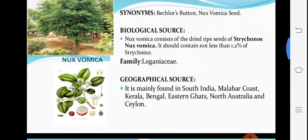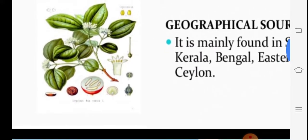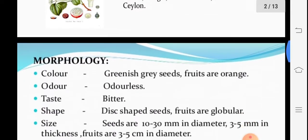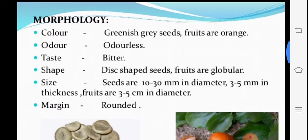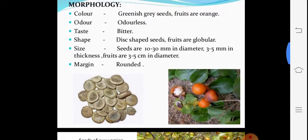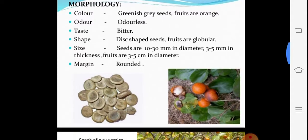Please see the flowering twig, the fruit, and the seeds. The fruits resemble those of Terminalia. The fruits are two to four seeded. Morphologically, the seeds are greenish-gray in color, and the fruit is orange in color. The seeds are odorless and bitter in taste. The shape is disc-shaped — flat — about 10 to 30 millimeters in diameter and 3 to 5 mm in thickness.